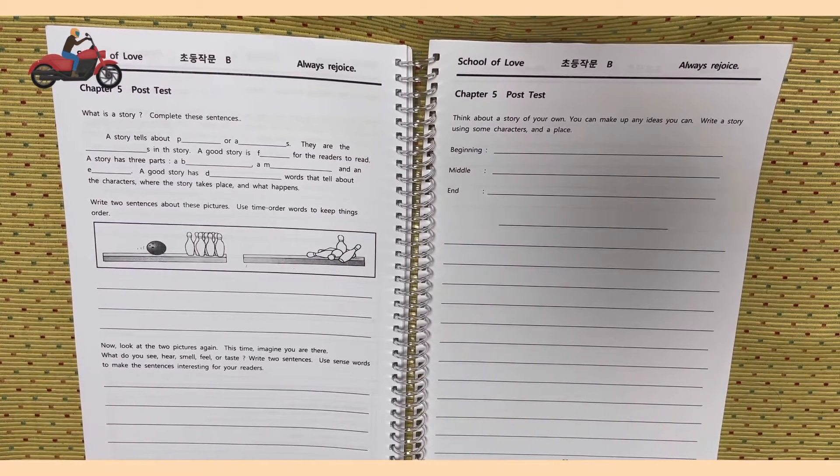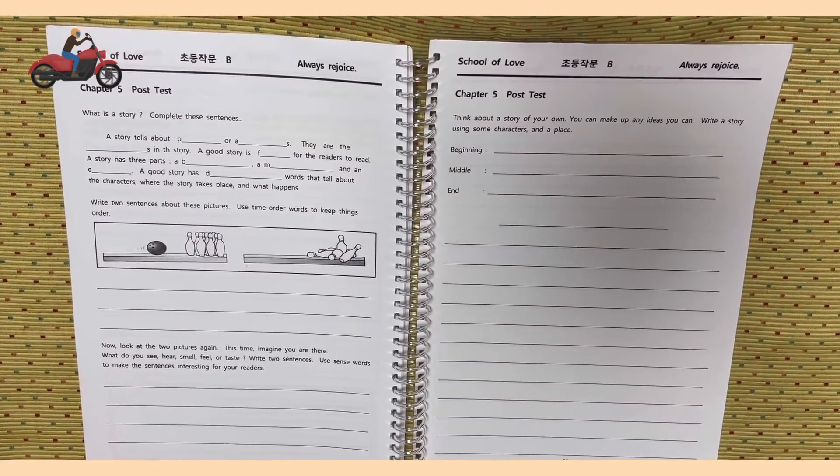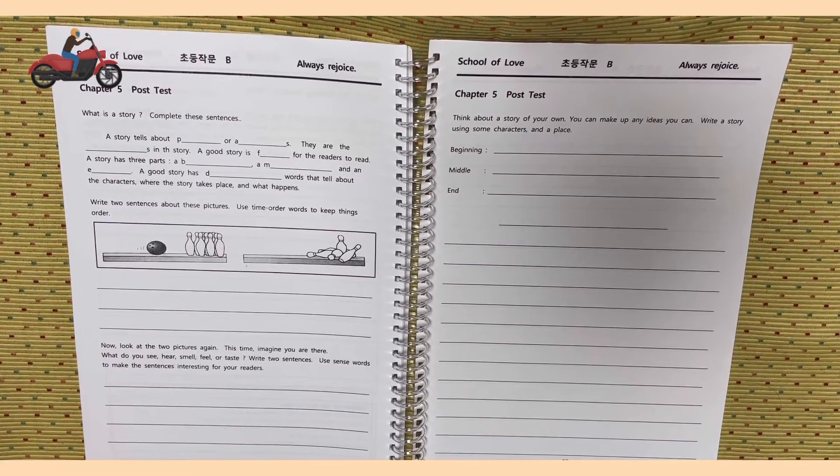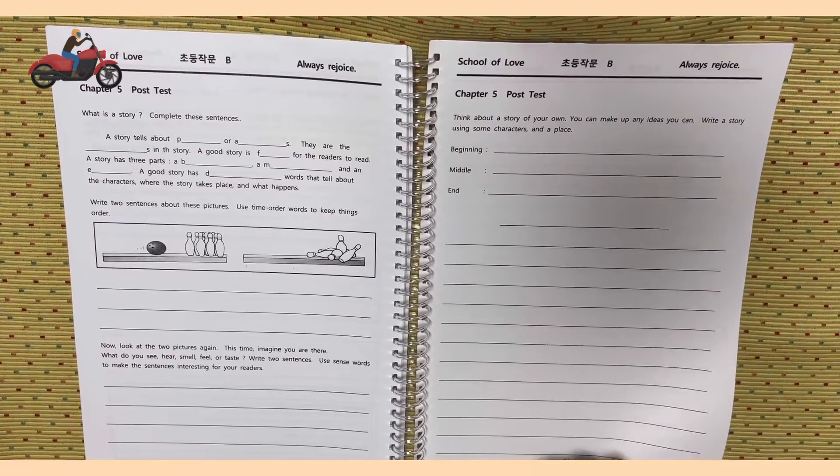Now look at the two pictures again. This time, imagine you are there. What do you see? Hear, smell, feel, or taste? Write two sentences. Use words to make the sentences interesting for your reader.